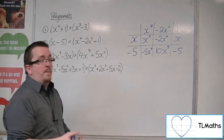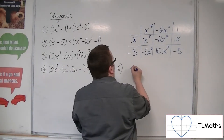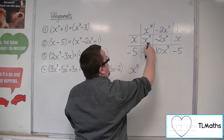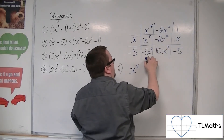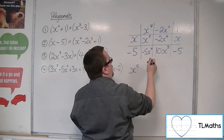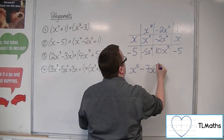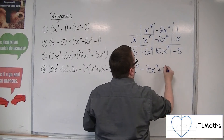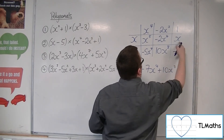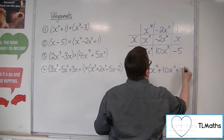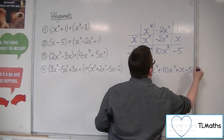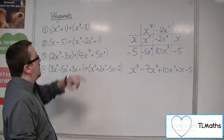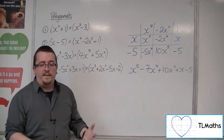Going from the highest order: x to the 5. Then we've got minus 2x to the 4 and minus 5x to the 4, which makes minus 7x to the 4. We've got the 10x cubed. Then we've got the x. And then we've got the minus 5. And that is number 2 expanded.